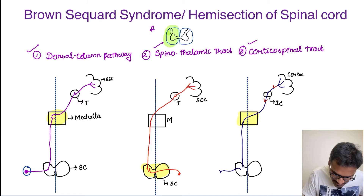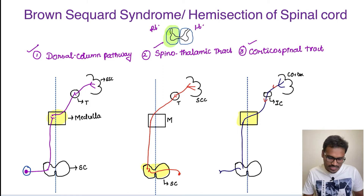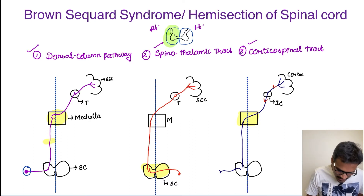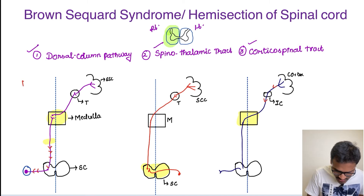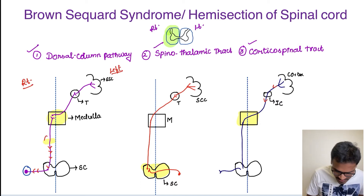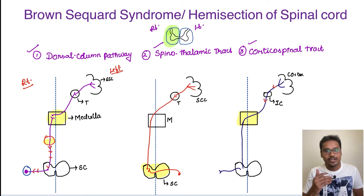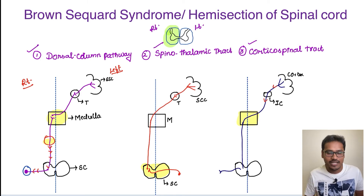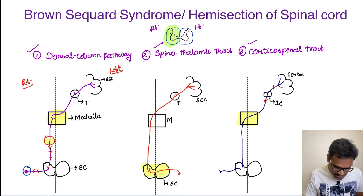Let's take this as the right side and this as the left side. There is a lesion on the right side. If there is a lesion on the right side in the dorsal column — since the fibers are crossing only in the medulla — the same side is affected. So which side's dorsal column pathway is affected in hemisection of the spinal cord? It is the ipsilateral dorsal column pathway that is affected.